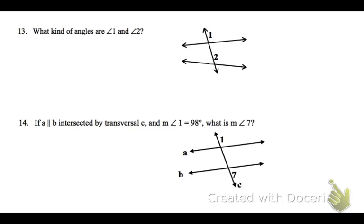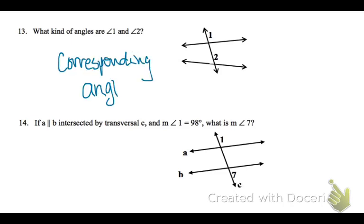On number 13, angles 1 and 2 are in the same location in each of the intersections, so that makes them corresponding angles.